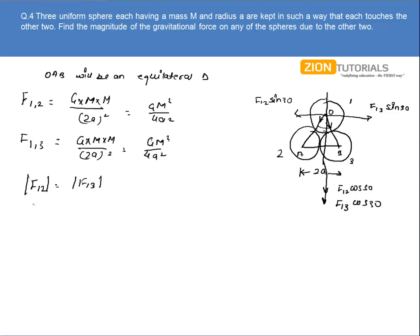Then clearly the magnitude of F12 cos of 30 will also be equal to F13 cos of 30. And also the mod of F12 sin of 30 will be equal to the mod of F13 sin of 30.